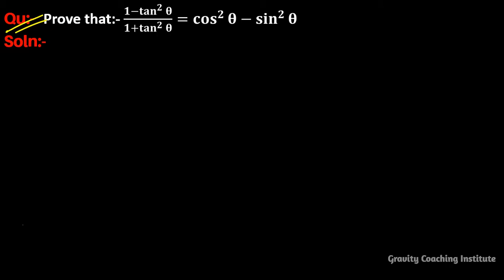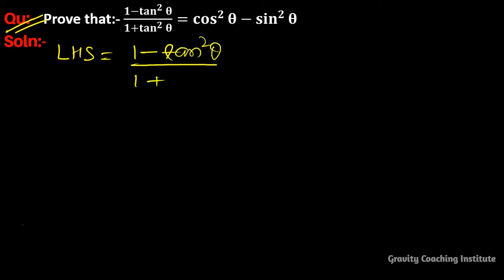Question: prove that (1 - tan²θ) / (1 + tan²θ) = cos²θ - sin²θ. So here, LHS is equal to (1 - tan²θ) / (1 + tan²θ).